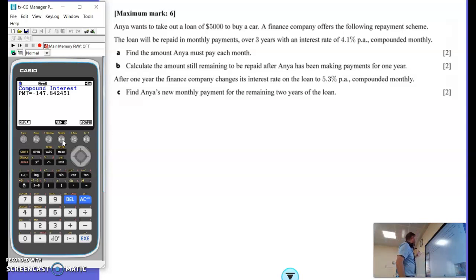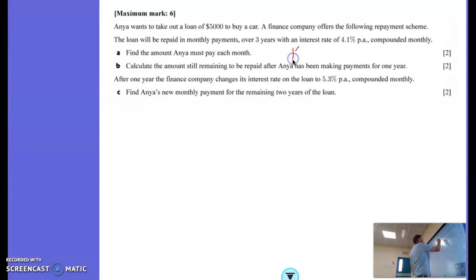From her pocket to the bank is going $147.84. So, the monthly payment is $147.84. All right. Part B.